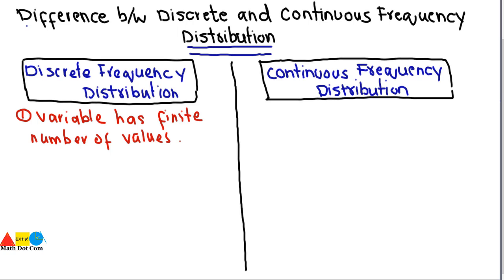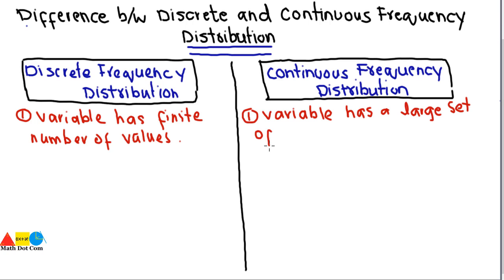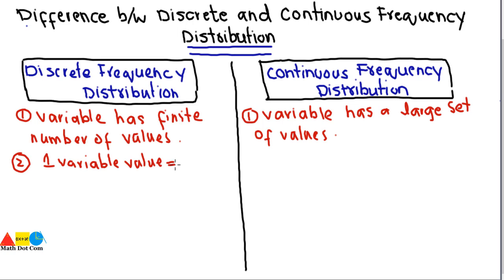In the case of continuous frequency distribution, the variable values form a large set. When you come across a large set of values of a variable, you have to use the method of continuous frequency distribution.